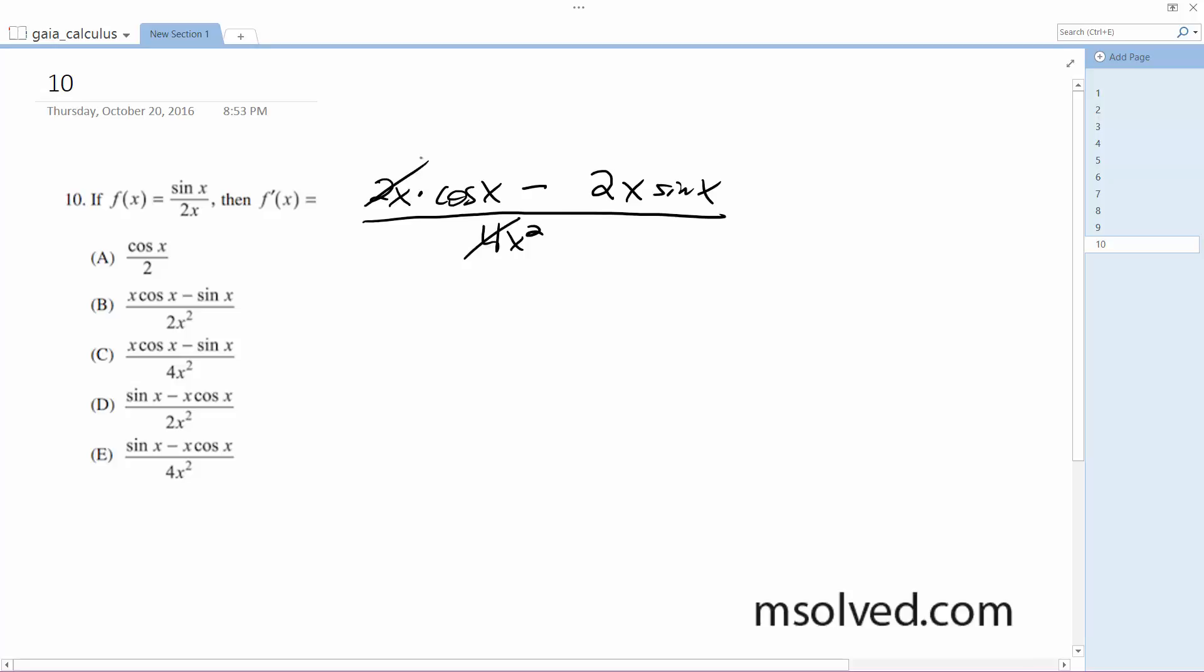This can become x cosine x minus x sine x over 2x squared, so this is equal to